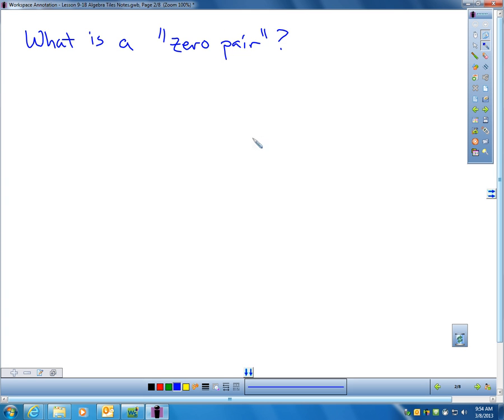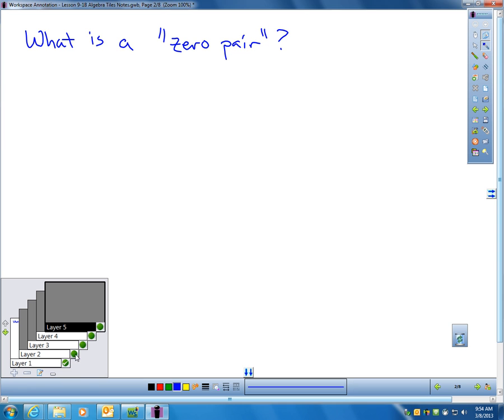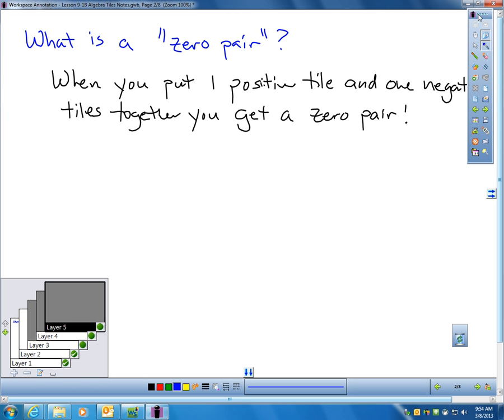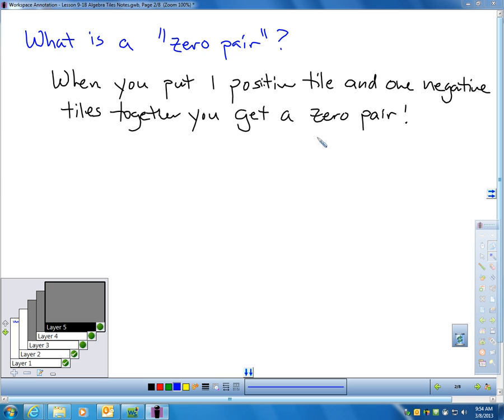We have to understand what a zero pair is when we work with algebra tiles. When you put one positive tile together and one negative tile together, it's like adding 1 and negative 1, and it gives you a zero pair. Whenever you combine a positive tile and a negative tile of the same type, those basically create zero pair and they vanish, because 1 and negative 1 gives you nothing.